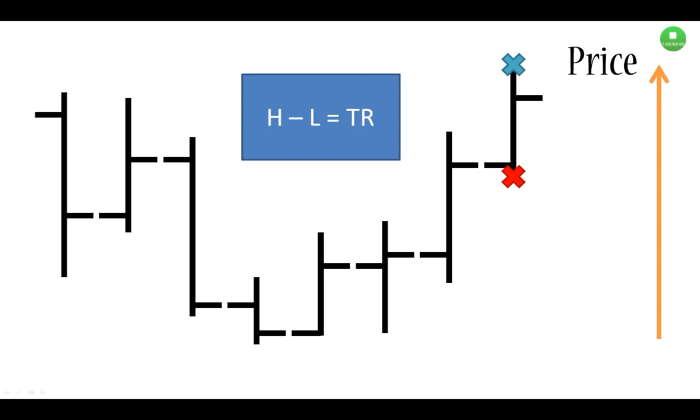It basically indicates what the volatility or the amplitude of the market movement was for today. That's an example of an indicator because that value, the true range, is not actually given to you by default, but you can derive it from these two values.